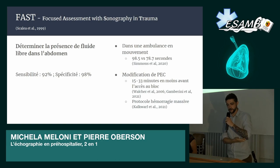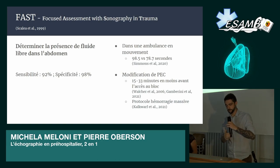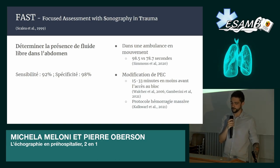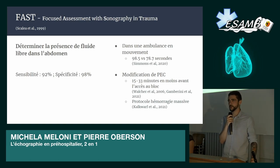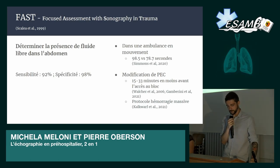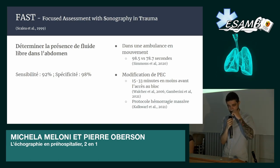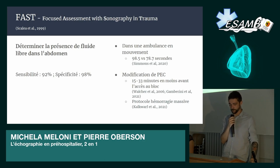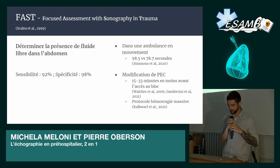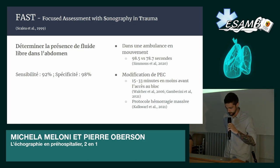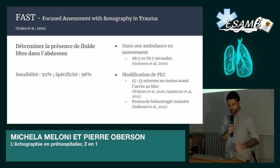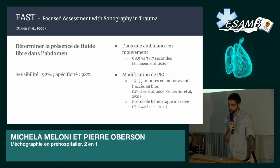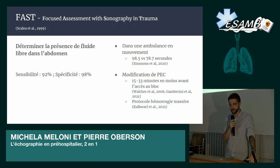On va commencer par le FAST parce que c'est le plus ancien des protocoles, le plus connu aussi — il y a déjà eu un travail de diplôme il y a deux ans, celui de Basile Berger, qui parle du FAST. L'objectif de ce protocole, c'est de déterminer la présence de fluides libres dans l'abdomen. On n'utilise pas le terme de sang parce que ce n'est pas forcément du sang qu'on va observer, mais on peut déterminer s'il y a du fluide dans l'abdomen.